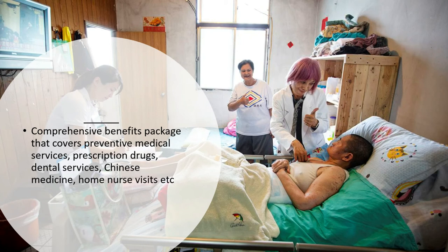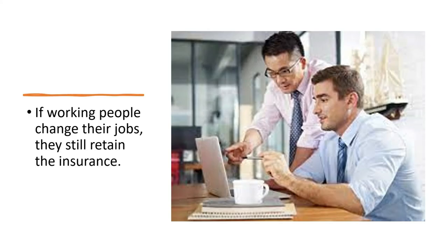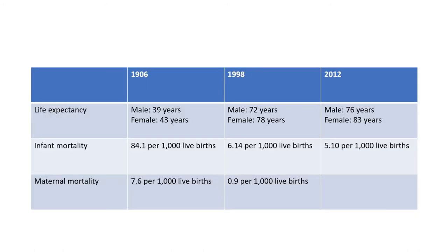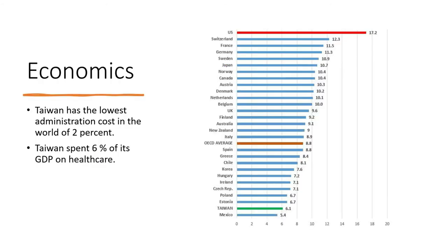Taiwan's comprehensive benefit package covers preventive medical services, prescription drugs, dental services, Chinese medicine, and home visits. If working people change their jobs, they still retain insurance. After the implementation of national health insurance in 1995, there was an increase in life expectancy for both males and females, and a decrease in both infant mortality rate and maternal mortality rate. Taiwan has the lowest administration cost in the world at 2%, and spends nearly 6.1% of its GDP on healthcare — quite below compared to other countries.